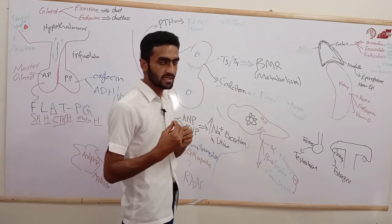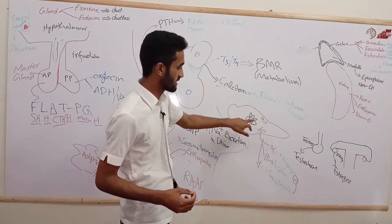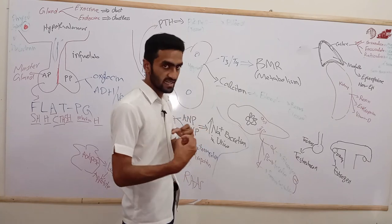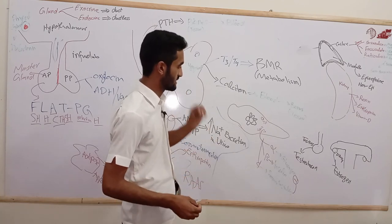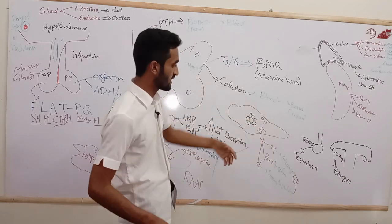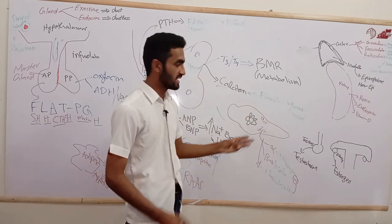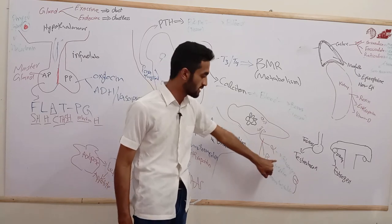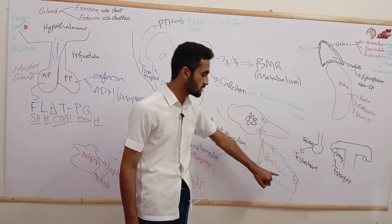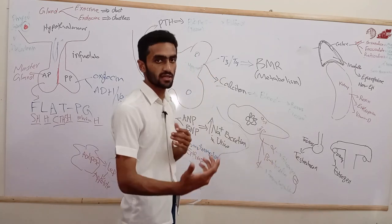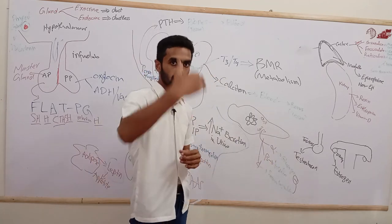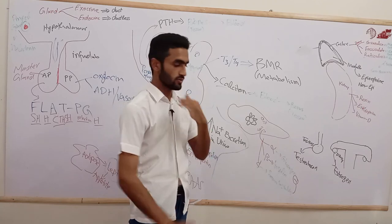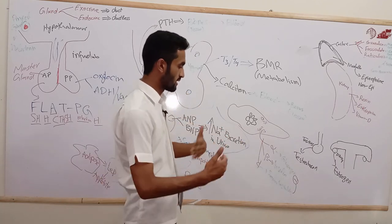The pancreas is a major gland — 98% exocrine and 2% endocrine. The exocrine portion has acinar cells secreting through ducts. The endocrine portion consists of islet cells with three types: alpha cells secreting glucagon, beta cells secreting insulin, and delta cells secreting somatostatin. Somatostatin inhibits glucagon. Insulin decreases blood glucose, while glucagon increases it.